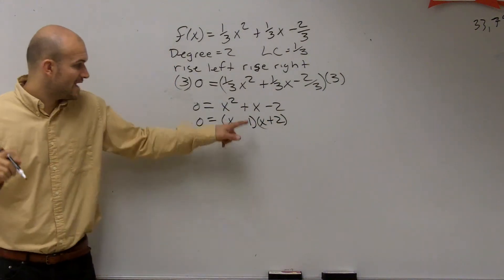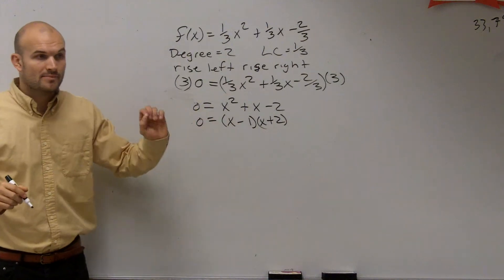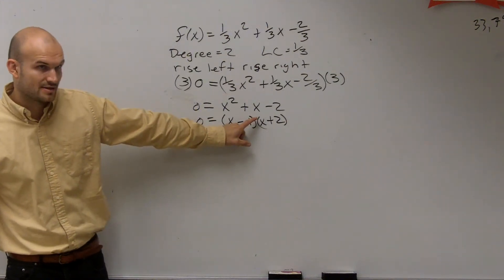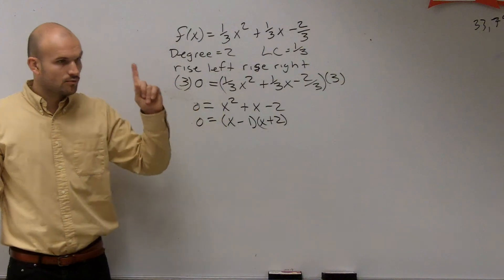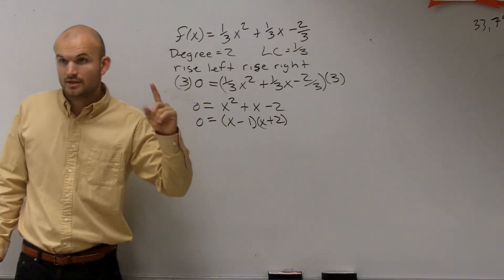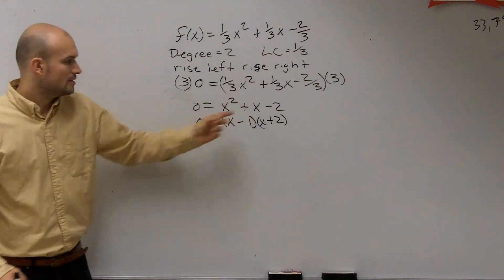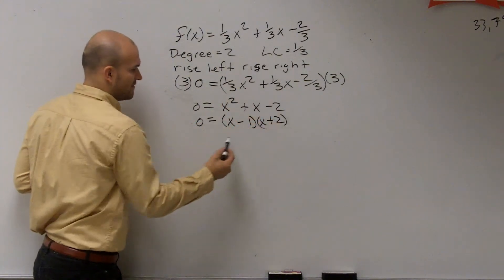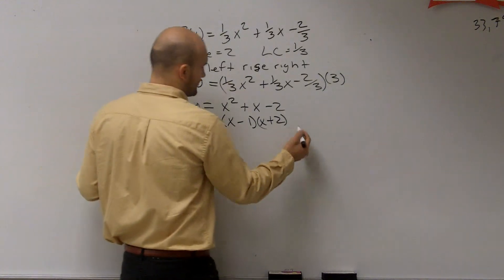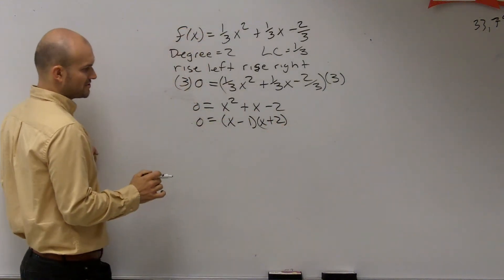Now, to look at determined multiplicity, we have our factors. Remember, with our factors, we look at the exponent of our factor. If the exponent of our factor is 1, we have a multiplicity of 1. If it was 2, we had a multiplicity of 2, correct? So we notice that these both have an exponent of 1. Well, let's get to our zeros first.